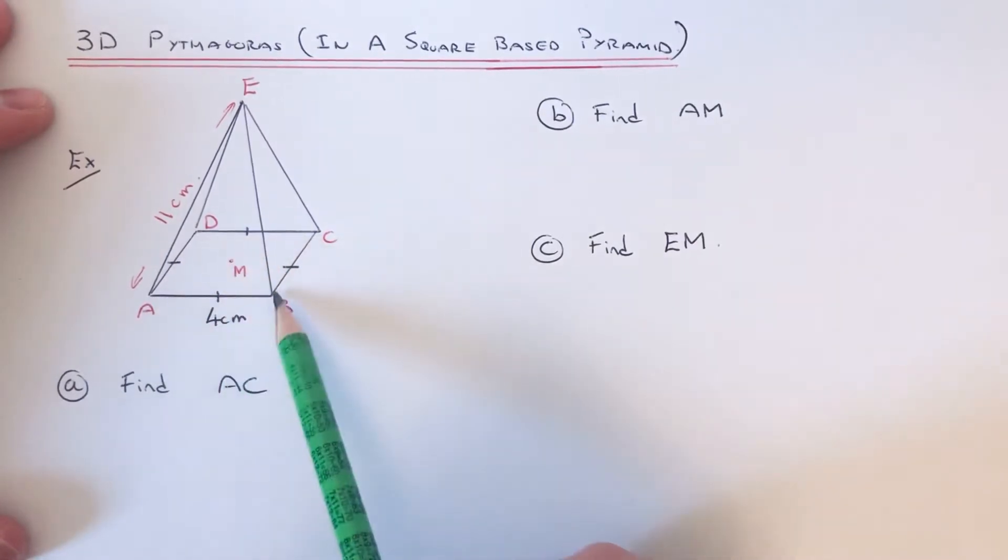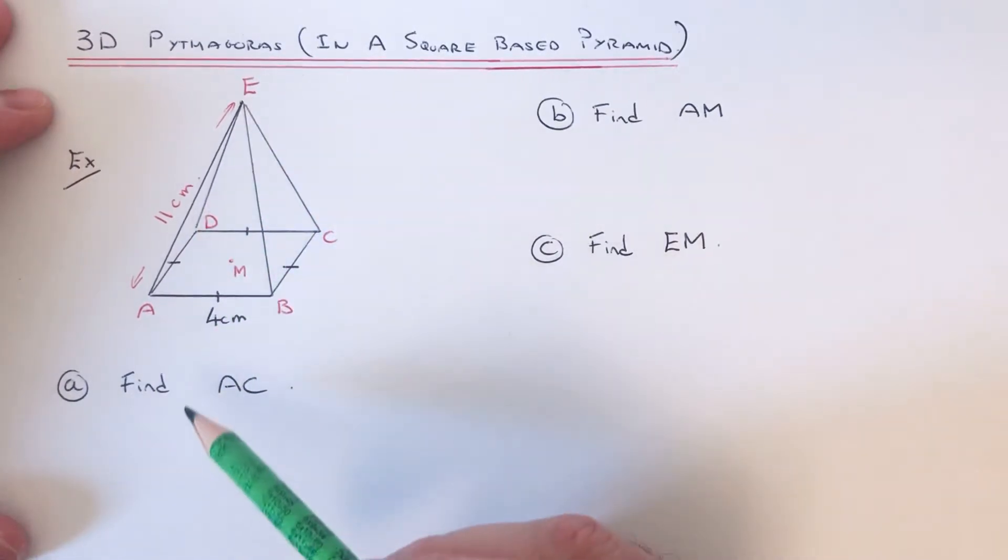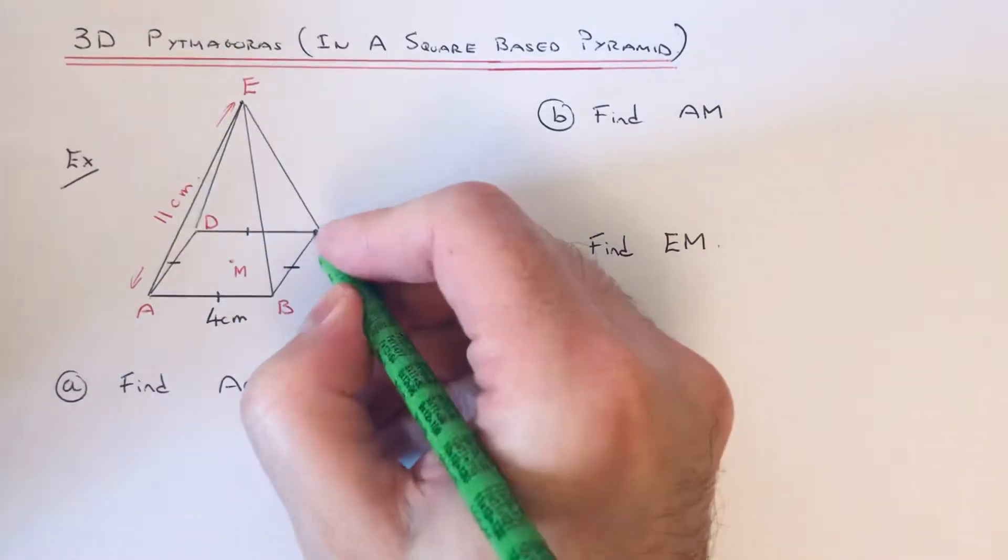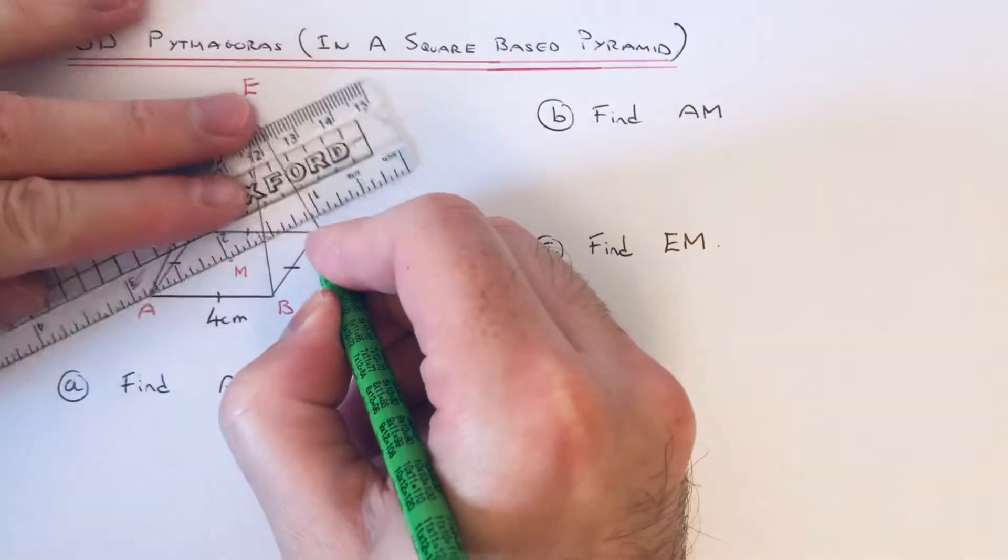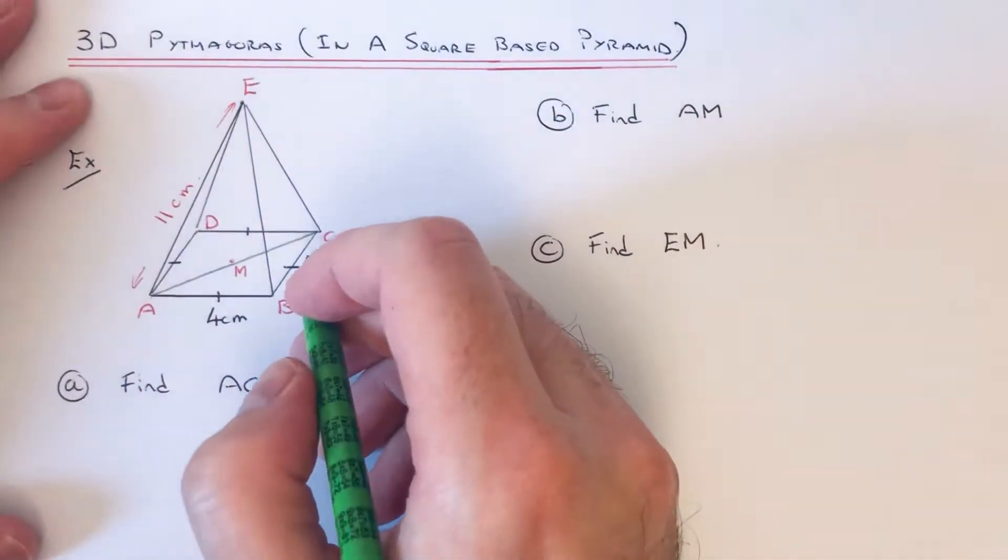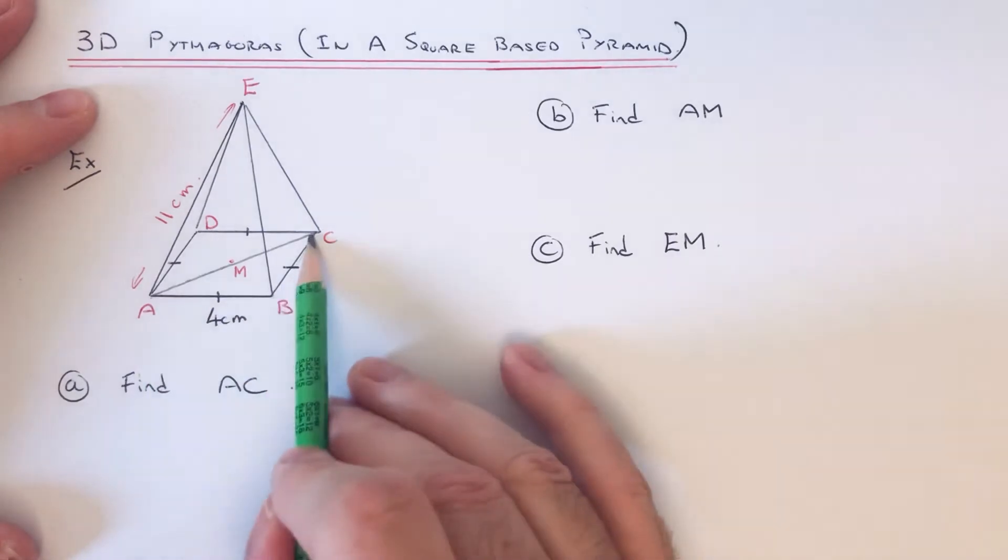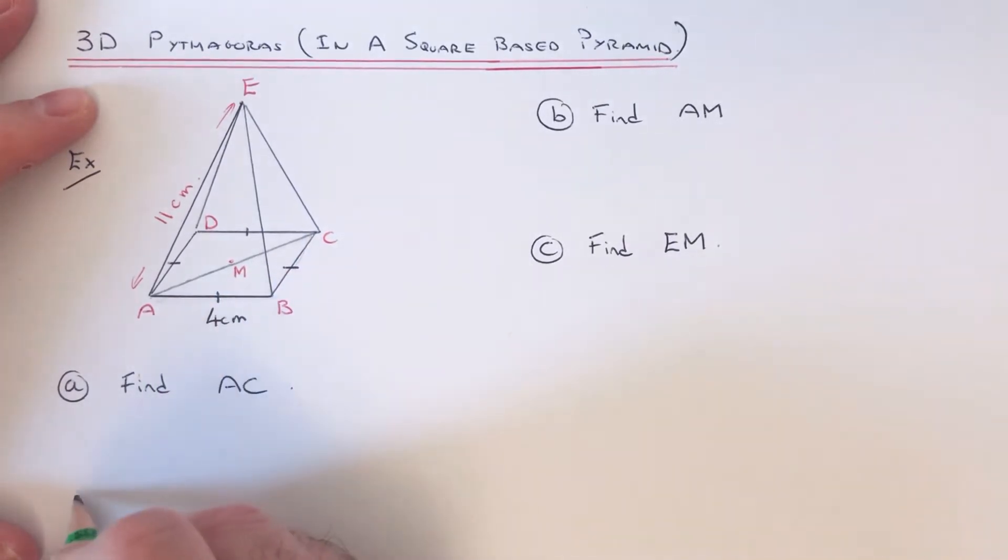So our first question is to work out the length AC. So this is this length here. Now it's probably best that you draw out the right-angle triangle which you're going to use. This will be triangle ABC. It just makes it easier to do—you don't have to do it if you don't want to though.